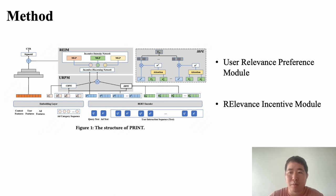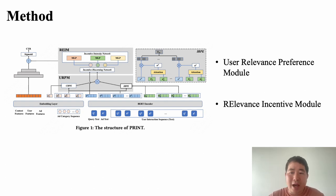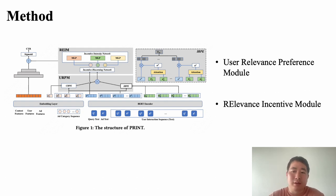To address this, we propose Print to explicitly model the specific incentives of the semantic relevance on user click probability. We have designed a board-based user relevant preference model to encode the user's personalized relevant preference, and a user incentive model to identify three special incentive types and their impact on click probability.